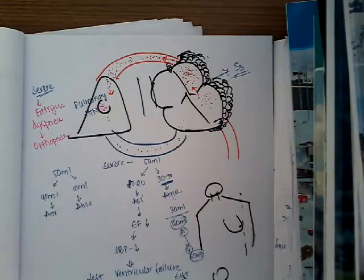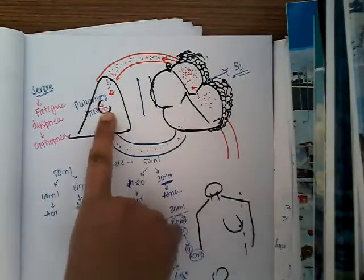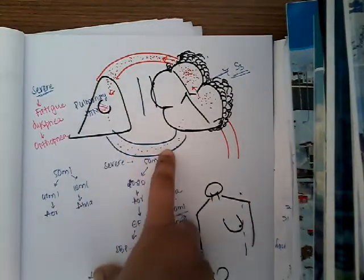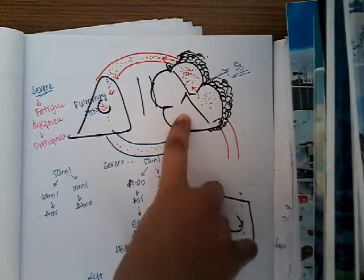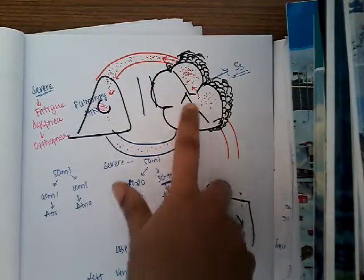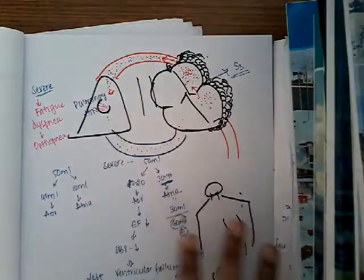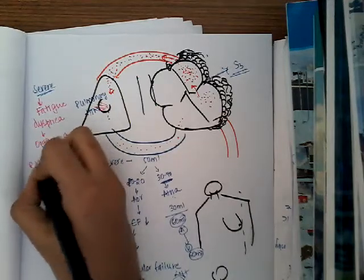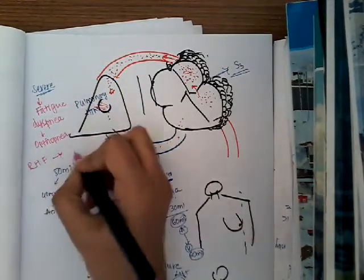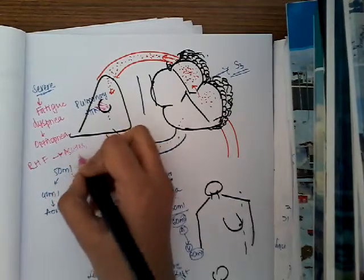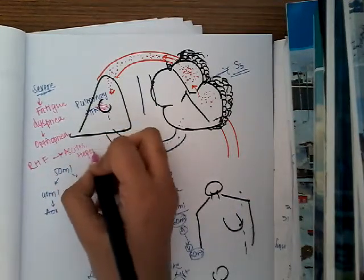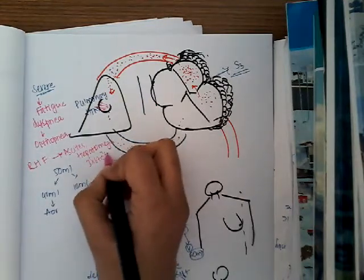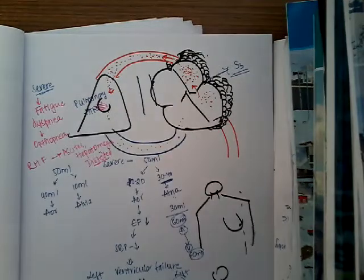If the disease is so severe that back pressure from pulmonary hypertension increases in the pulmonary veins and then in the right ventricle and right atrium, there can be right heart failure. In very severe cases with right heart failure, there can be ascites, hepatomegaly, or distended neck veins — features of right heart failure.